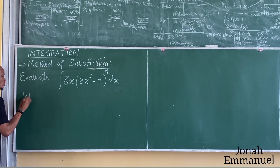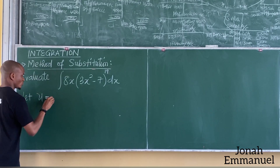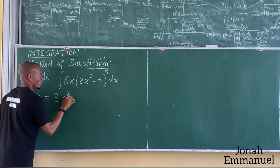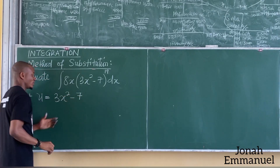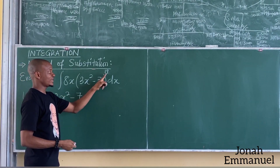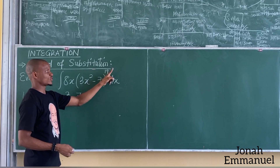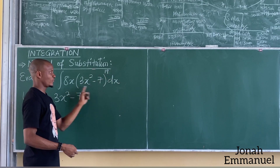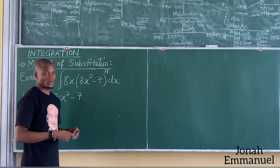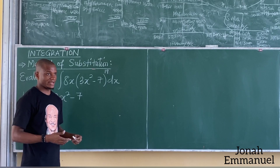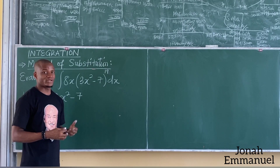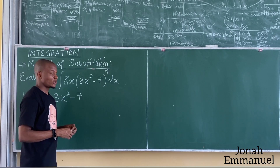So let u be equal to 3x squared minus 7. Before this, you can't say 19 plus 1 all over 19 plus 1 — that's not correct. So I can't use the general method here.